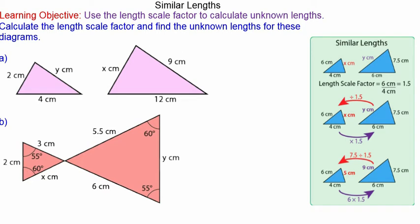In this lesson we're going to use length scale factor to calculate unknown lengths in similar shapes. For question A, the two triangles are similar, so we can work out the length scale factor by doing 12 divided by 4, as these are corresponding lengths.